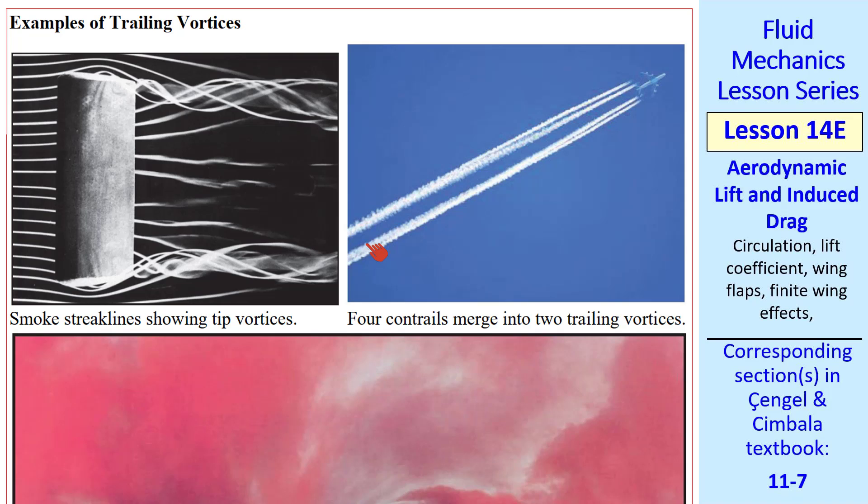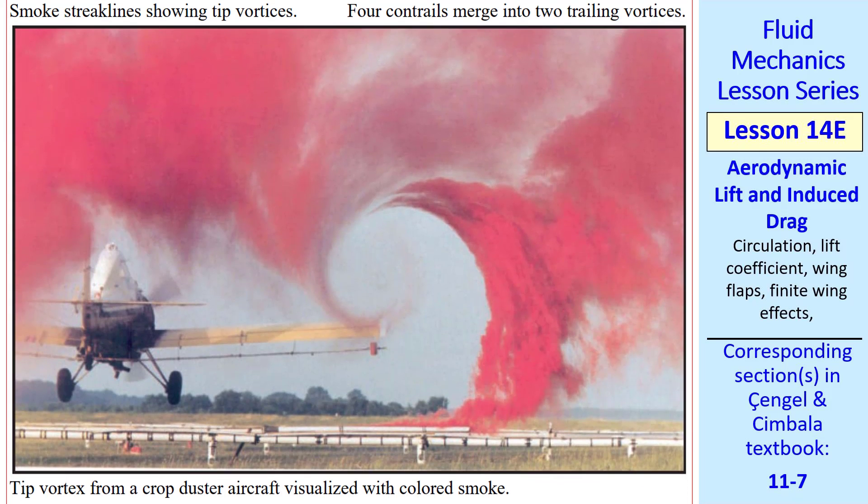There are four engines on this plane, but they quickly start spinning together, and eventually you always see two contrails from any airplane. Despite common belief, these are not smoke. They're condensed water vapor, the tiny little water droplets that appear like clouds. Here's a really cool picture in our book of a crop duster airplane with a huge tip vortex visualized by colored smoke.